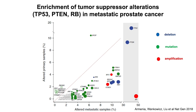Those alterations are: loss of P53, loss of PTEN, and amplification or mutation in the androgen receptor — which is almost never seen in primary cancer, as you can see here near zero. That's clearly a response to treatment with hormone therapy. The other alteration I want to point out is loss of the retinoblastoma gene, which is seen in about 30 percent of late-stage cases and is pretty unusual in primary cancer.